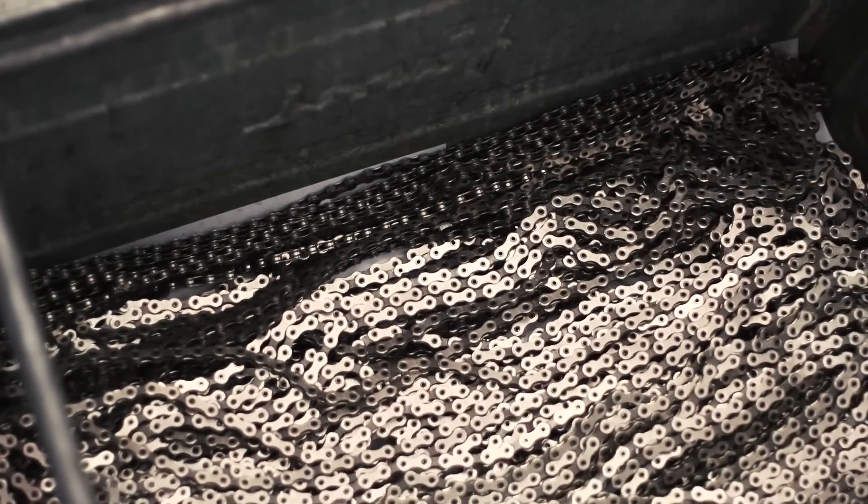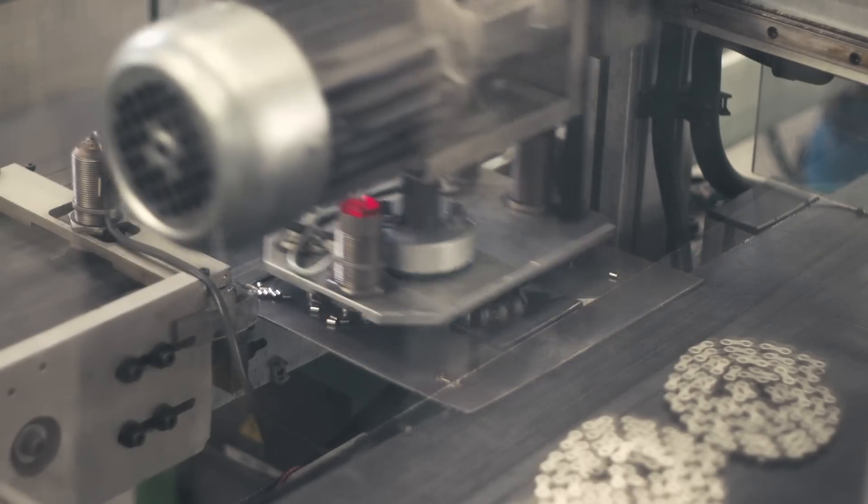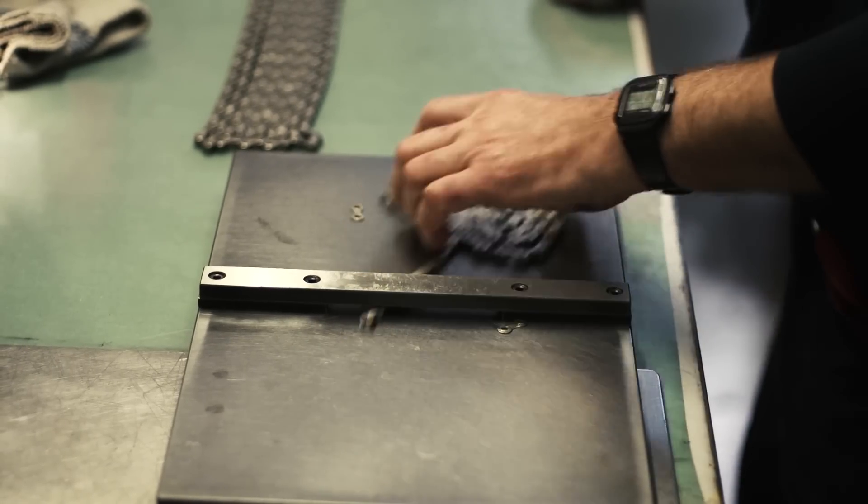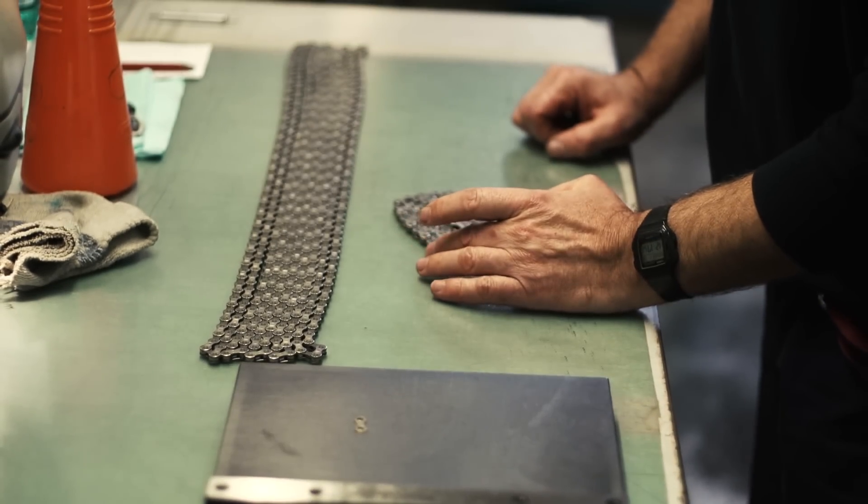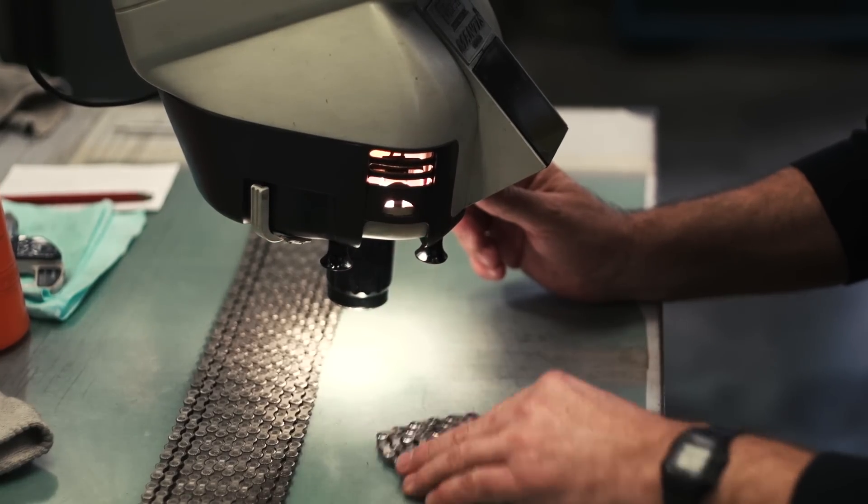The finished product is given a light lubricant and wound into a spiral, ready for a final inspection by hand. Even a tiny flaw will result in a malfunction so the chain is put under a microscope to check for defects.